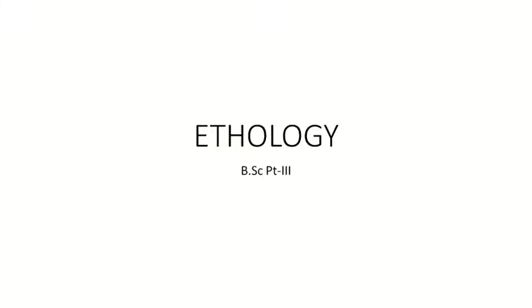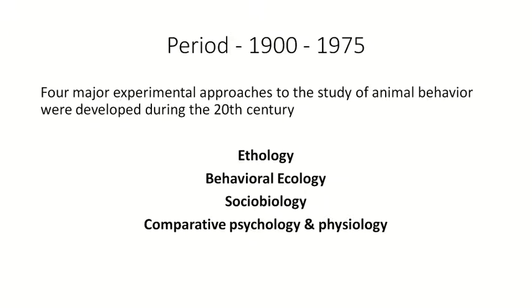Hello students, today we will discuss the introduction to Ketology. In the period 1900 to 1975, many experiments took place, and due to these experimental approaches, the study of animal behavior developed during the 20th century. The four experimental approaches which developed were: first, Ethology; second, Behavioral Ecology; third, Sociobiology; and fourth, Comparative Psychology and Physiology.